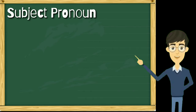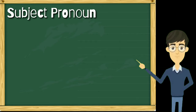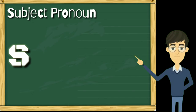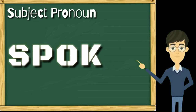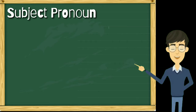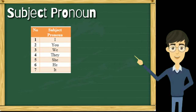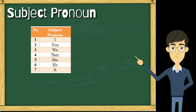Langsung saja kita masuk ke jenis pronoun yang pertama, subject pronoun. Subject pronoun memiliki posisi sebagai subject dalam sebuah kalimat — kalian tentunya masih ingat susunan kalimat S, P, O, K. Subject pronoun merupakan pronoun yang bertugas sebagai pelaku dalam sebuah kalimat. Siapa saja setiap subject pronoun itu? Mereka adalah I, you, we, they, he, she, it.